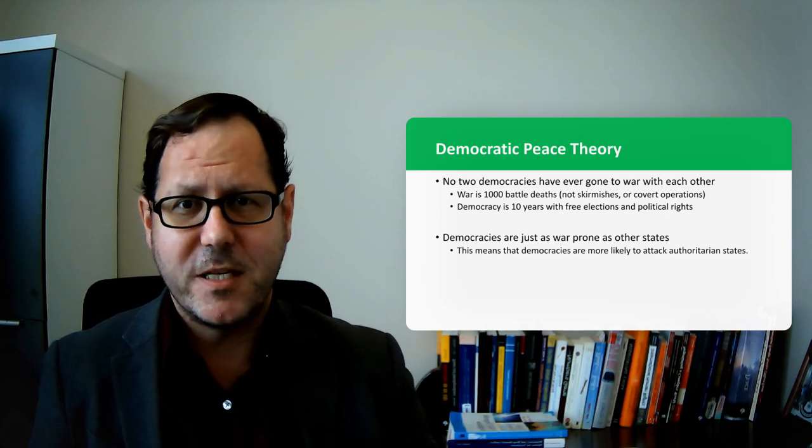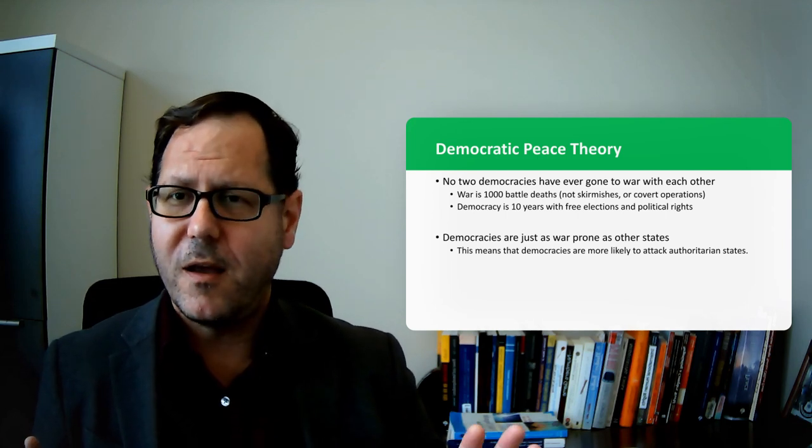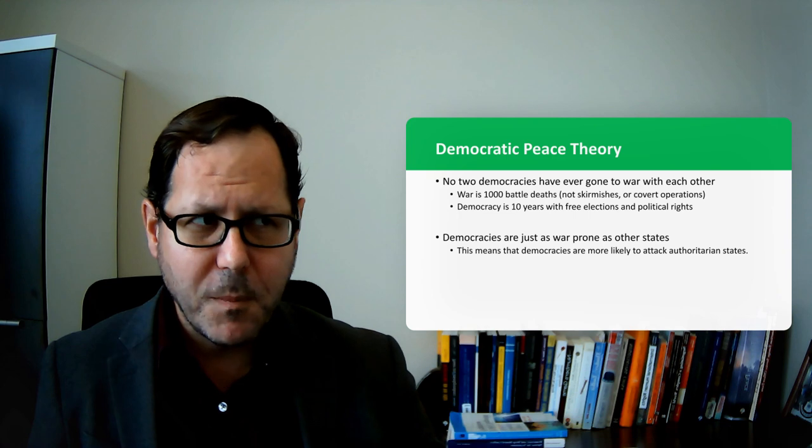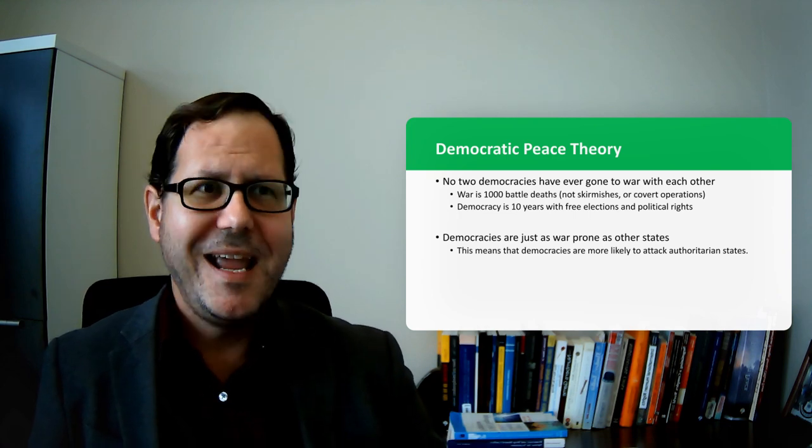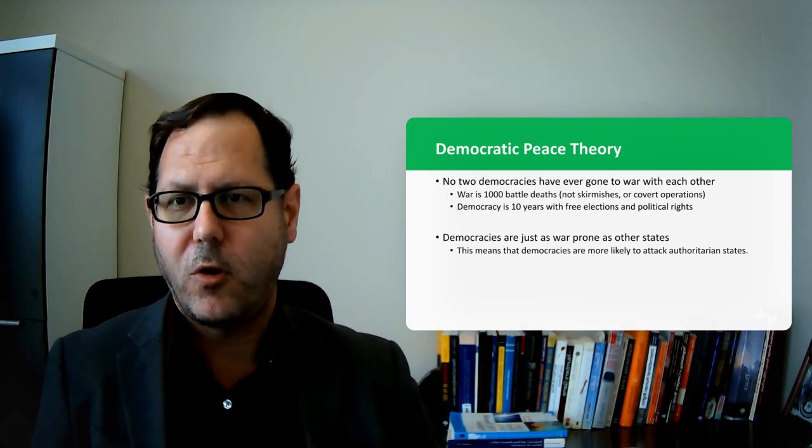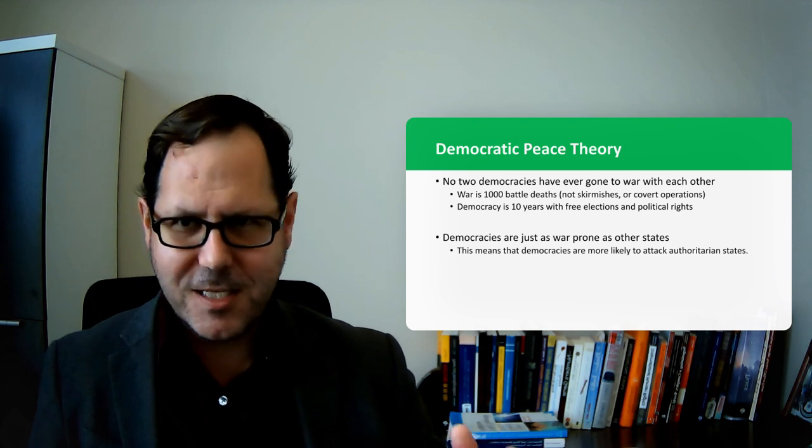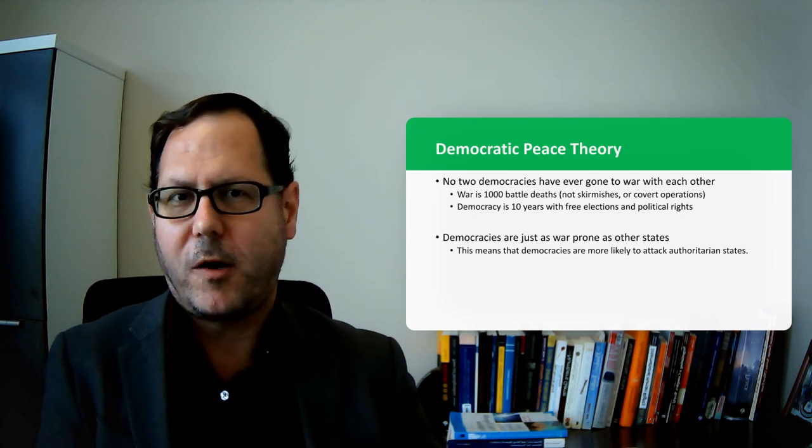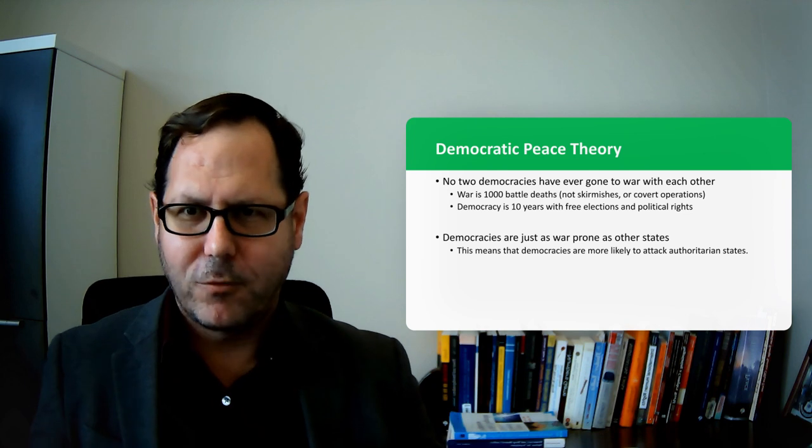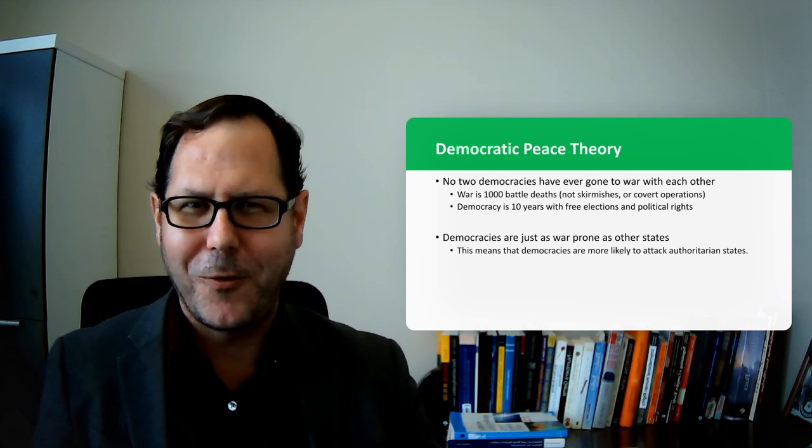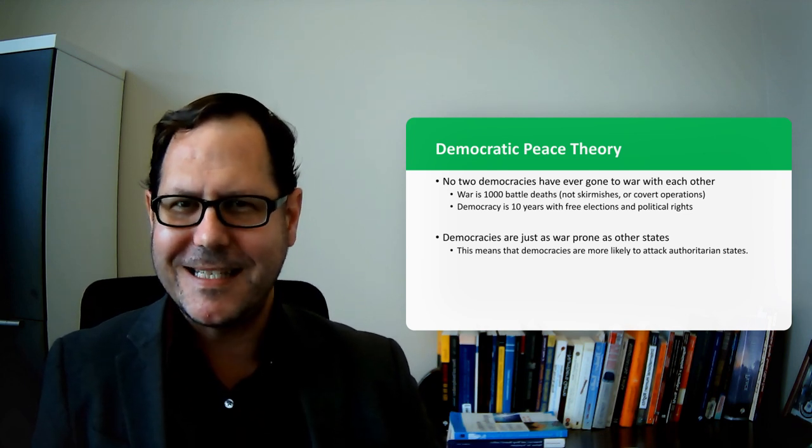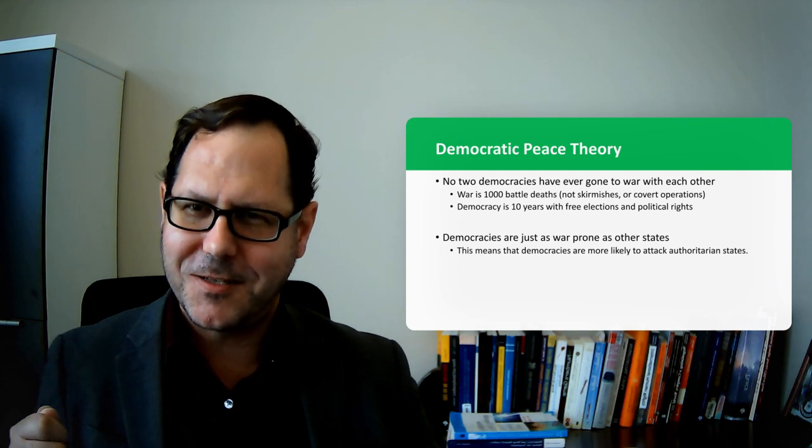So when political scientists talk about the democratic peace theory, we're really just talking about a phenomenon that we've observed, an empirical phenomenon. Some people would even say it's the closest thing we have to an empirical law in all of the social sciences. It's just the simple observation that no two democracies have ever gone to war with each other, at least in terms of how political scientists measure war.